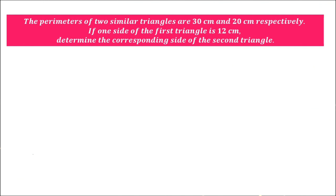First question: The perimeters of two similar triangles are 30 cm and 20 cm respectively. If one side of the first triangle is 12 cm, determine the corresponding side of the second triangle.